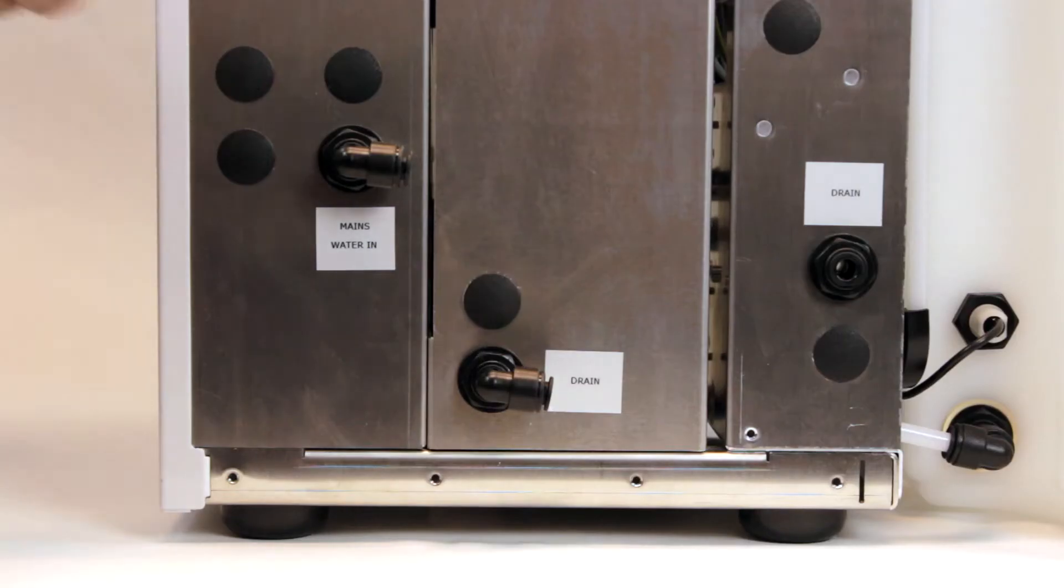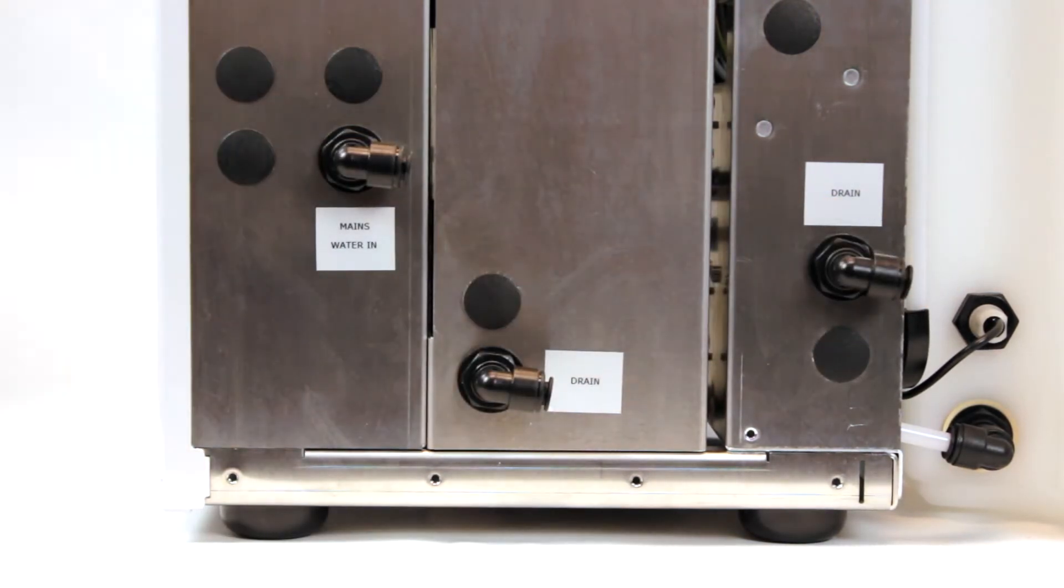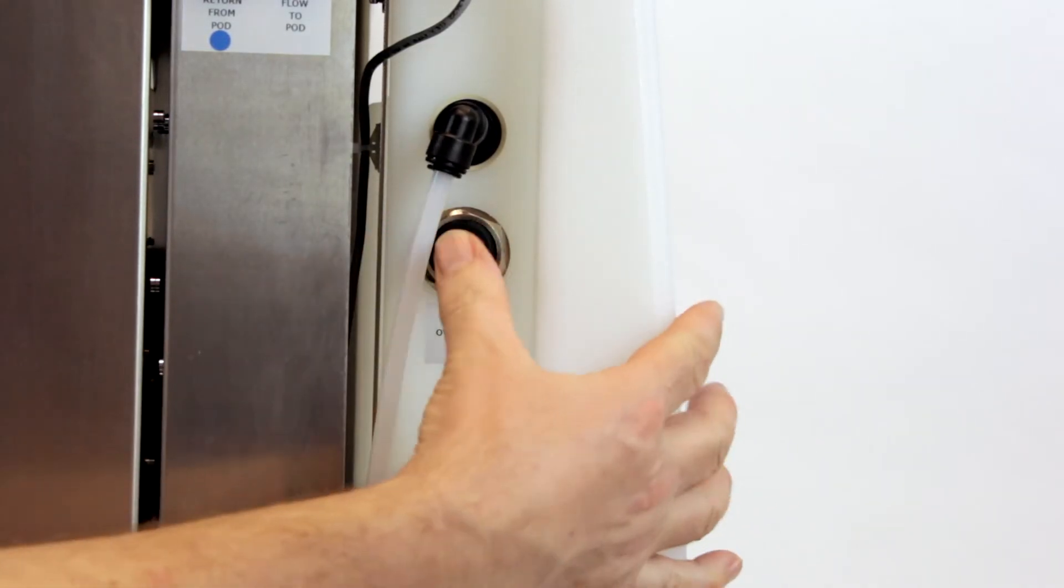Next, push fit the stem elbows into the water inlet and drain connections before push fitting the hose tail to the overflow.